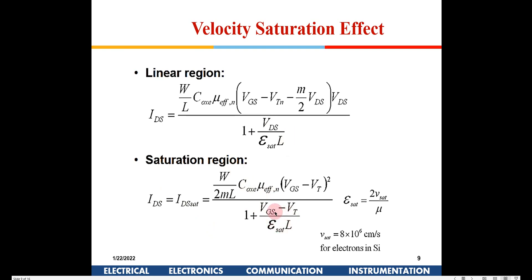In the saturation region, V_DS is replaced by V_GS − V_T. An empirical parameter m is also introduced because the initial derivation assumed an ideal trapezoidal channel profile from source to drain, which is not accurate for short channel devices. This m value is fitted from experimental results. The net result for a VLSI engineer is that currents in short channel devices are lower than in long channel devices for the same W/L ratio, due to mobility degradation and velocity saturation.